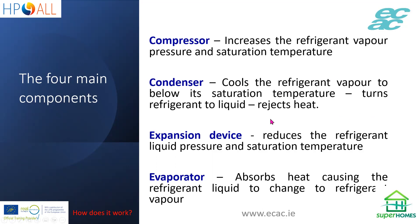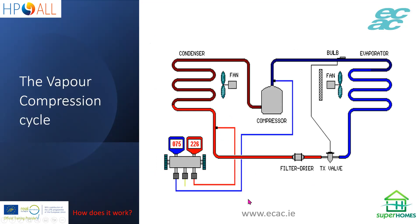The condenser cools the refrigerant vapor to below its saturation temperature — it's basically a heat exchanger. It's a passive device and not a whole lot can go wrong with it barring leaks, but it does have a big role to play in energy efficiency. The expansion device reduces the refrigerant liquid pressure and saturation temperature — it's basically the opposite of the compressor. And the evaporator absorbs heat, causing the refrigerant to change from liquid to vapor. That's our basic cycle.